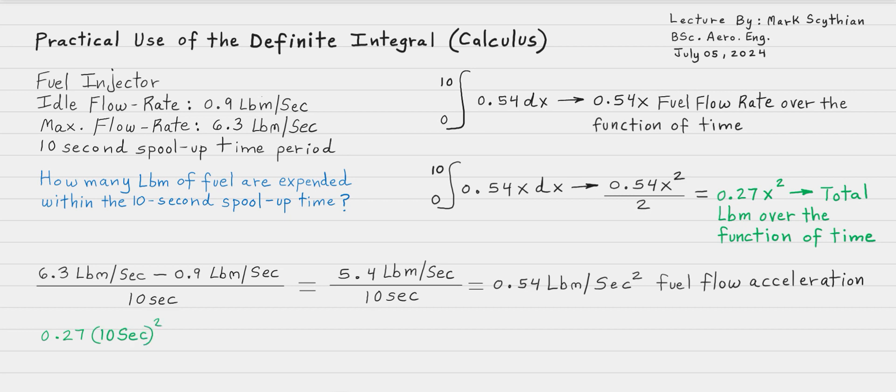x squared, so 10 seconds squared times 0.27 and then we can subtract 0.27 times 0 seconds squared. Now this second value becomes 0. We have 27.0 because 10 squared is 100 times 0.27. So we have 27.0 minus 0.